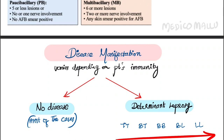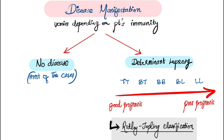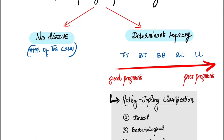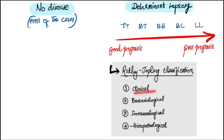Regarding disease manifestation, it varies depending on the patient's immunity. Many cases show no disease at all. In some cases, there is determinate leprosy where the disease becomes evident. It is classified by Ridley-Jopling into TT, BT, BB, BL, and LL — that is tuberculoid, borderline tuberculoid, borderline-borderline, borderline lepromatous, and lepromatous leprosy. Good prognosis is for TT, whereas lepromatous leprosy has a poor prognosis.